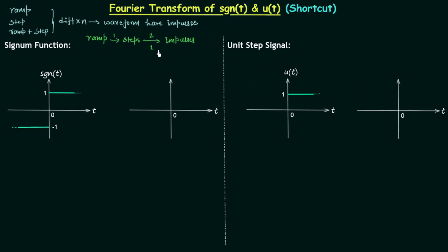If we have a signal that is a combination of both ramp and step, the method changes slightly. We will understand that change in an example lecture, and I will put the link in the description. Now we will solve two examples to understand the method of differentiation in a better way. The two examples are standard signals.